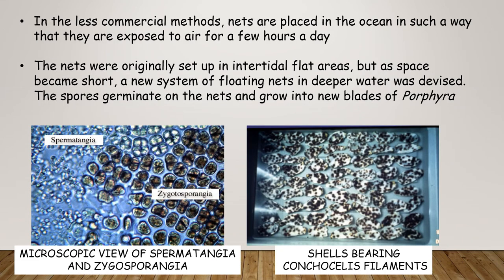In less commercial methods, nets are placed in the ocean in such a way that they are exposed to air for a few hours a day. The nets were originally set up in intertidal flat areas, but as space became short, a new system of floating nets in deeper water was devised. The spores germinate on the nets and grow into new blades of Porphyra.